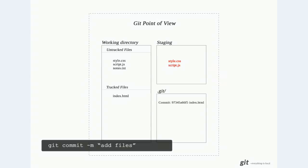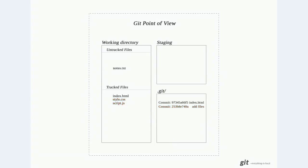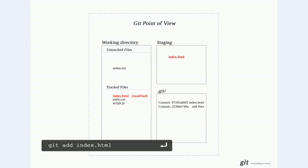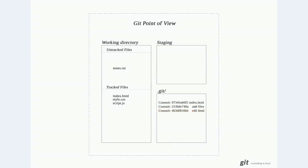Now we want to commit those changes, so we use the git commit command and again we'll use the -m option and put a description on that commit. We run that, the commit is logged to the git directory, and the files are now considered tracked. If we then make some edits to our index.html file and want to add it to the staging area, we use git add with the file name, then git commit again. That is the basic flow of tracking changes with git.